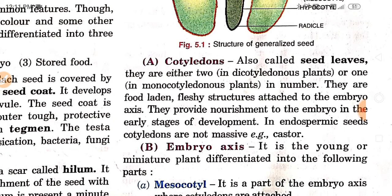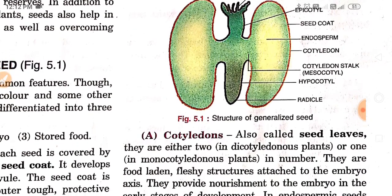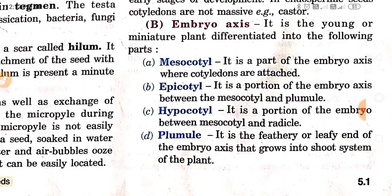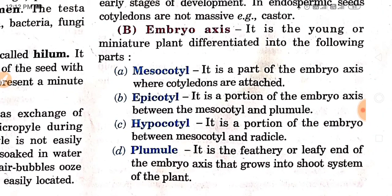Cotyledons provide nourishment to the embryo in the early stage of development. In endospermic seeds, cotyledons are not massive — for example, castor. The embryo axis is the young or miniature plant differentiated into the following parts: mesocotyl, epicotyl, hypocotyl, and plumule. The mesocotyl is the part of the embryo axis where cotyledons are attached. The epicotyl is the portion of the embryo axis between the mesocotyl and the plumule. The hypocotyl is the portion of the embryo between the mesocotyl and the radicle.